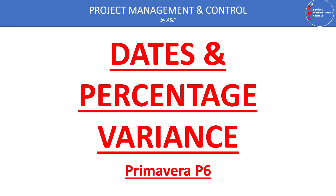The acceptable variance range is agreed upon with the client and consultant, so that it will not cause the project to be delayed. However, if the activity is not finished as scheduled and it is on the critical path, any delay in the completion of that activity will directly impact the completion of the project.